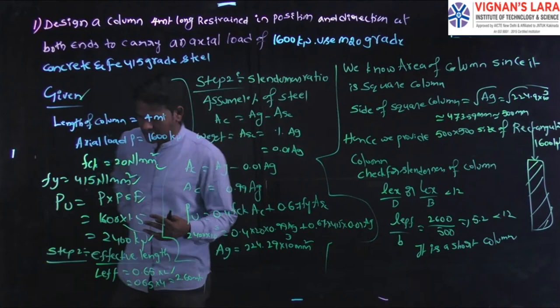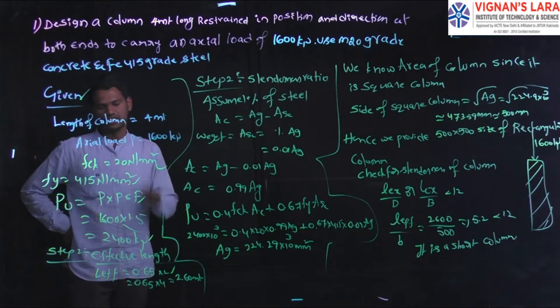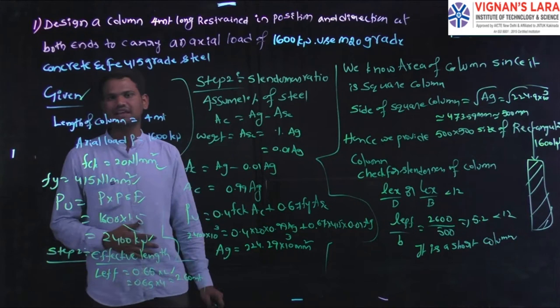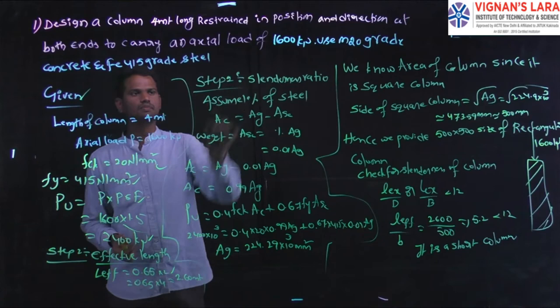For the design of this compression member, we should check whether the column is a short column or a long column, what the minimum eccentricity is, what the minimum moment carrying capacity is, and what percentage of reinforcement is provided in the concrete column and whether it resists the moment.